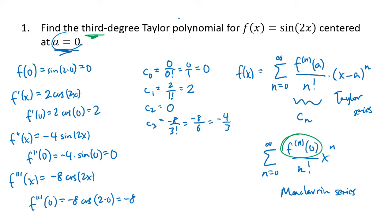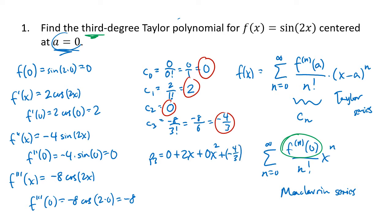These are our polynomial coefficients. The third degree Taylor polynomial is p3 = 0 + 2x + 0·x² + (−4/3)x³, which simplifies to 2x − (4/3)x³. We could keep computing more terms for a better approximation near the center, but we stop at third degree as instructed.